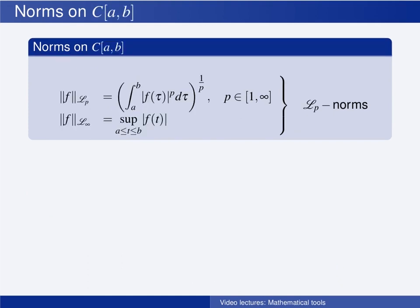Let us look at the set of all real-valued continuous functions defined on the set from a to b. Here too we have several alternative ways of measuring the length, that is the magnitude, of an element, and we call these the Lp-norms, defined for any p from 1 up to infinity. We find the general p-norm by taking the integral of the absolute value of the function raised to the power p, integrating from a to b, and then taking the pth root of the result. In the extreme case when p goes to infinity, the L-infinity norm is the supremum of the absolute value in the interval from a to b.